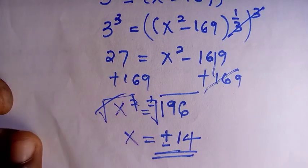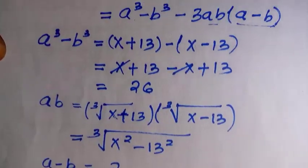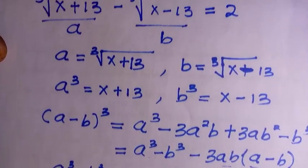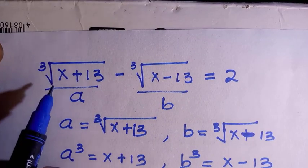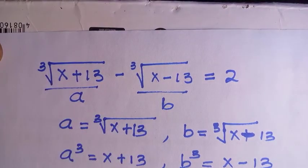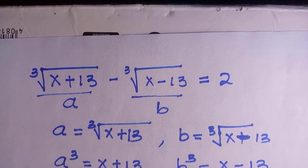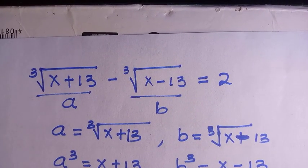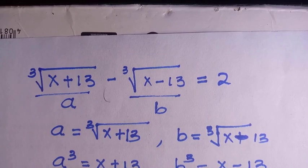So plus or minus 14 satisfies the given radical problem. Those are the solutions. I believe there's another way of doing this — if you know it, share it in the comment box. Don't forget to subscribe and like this video. I'll see you in the next class. Never stop learning!